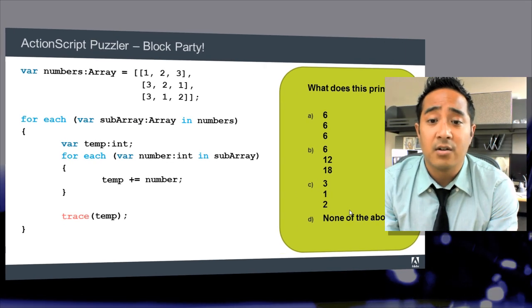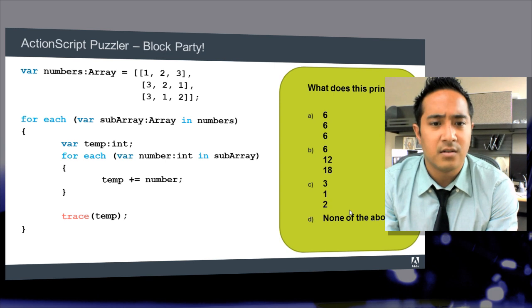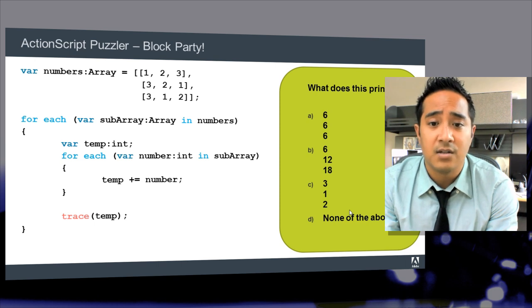Right away, I see that we declare an array called numbers. It's actually a two-dimensional array with the subarrays being a short list of numbers. The first being 1, 2, 3. The second being 3, 2, 1. And the third being 3, 1, 2.